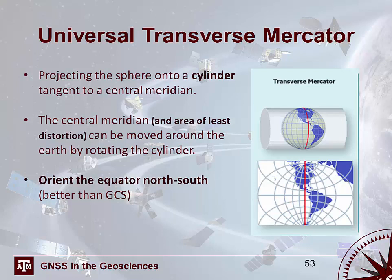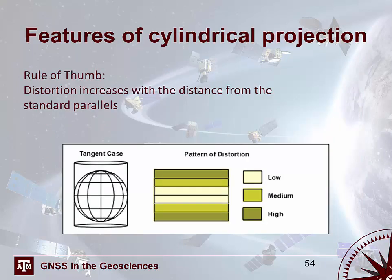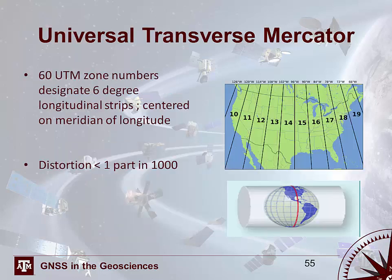UTM is perhaps the most common cylindrical projection you will come across. UTM stands for Universal Transverse Mercator, where the Earth is projected onto a cylinder tangent to a central meridian. Distortion is minimal at this central meridian, which can be moved around the Earth by simply rotating the cylinder. A general rule of thumb is that distortion increases with increasing distance from the standard parallels — for UTM, distortion is minimal along the central meridian and increases as you move away. The UTM system is composed of 60 zone numbers, each designating 6 degrees of longitude, each strip centered on a meridian. By dividing the Earth into multiple zones and rotating to a different central meridian, UTM minimizes distortion while maximizing global coverage.